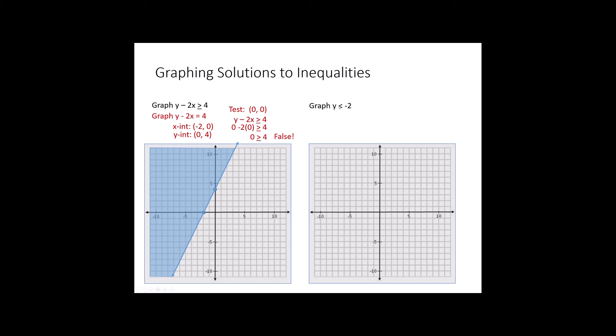How about graph y is less than negative 2? As always, I'm going to start with y equals negative 2. Hopefully you remember that y equals negative 2 is a horizontal line through negative 2 on the y-axis. Notice once again, I've made it dotted because I only want those things that are less than negative 2. I'm going to test 0, 0 again. y is less than negative 2 is my inequality. Since y is 0, I plug it in. This is false. I'm going to shade the side that does not have 0, 0 on it. Nothing above this line is less than negative 2. Everything below this line makes this statement true.